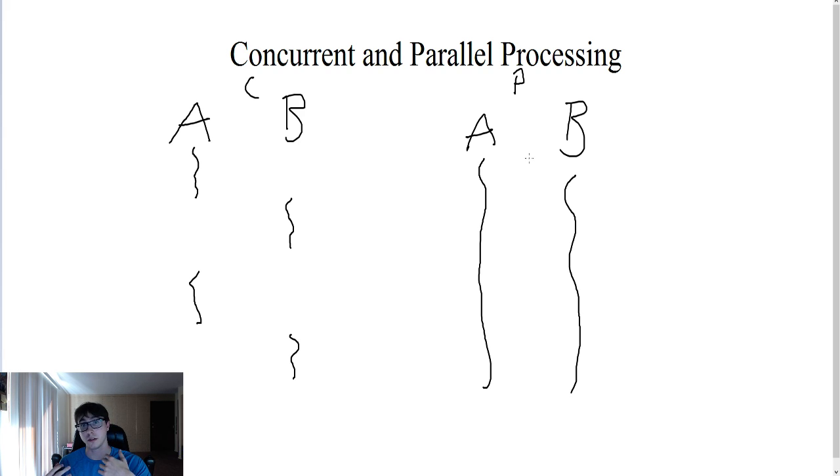It could also come about in the way that you're programming your application. You may want to program it in a way that your processes will only process concurrently, and you may want them to be parallel.